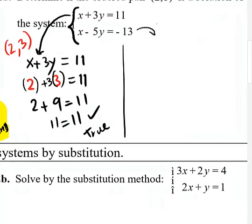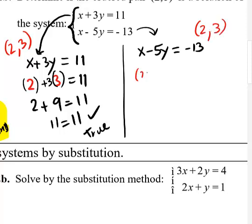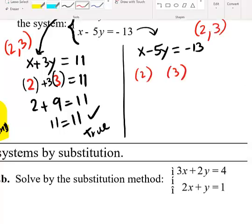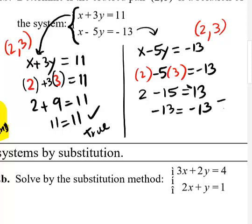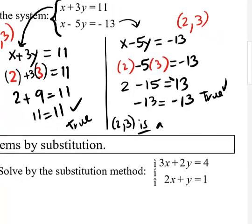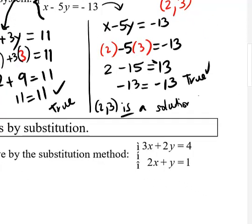Now I check the second equation also: x minus 5y equals negative 13. Substituting x equals 2 and y equals 3: it's 2 minus 5 times 3, which should equal negative 13. So 2 minus 15 equals negative 13. That's true — negative 13 equals negative 13. Since both are true, 2 comma 3 is a solution to the system, which means that is a point of intersection.